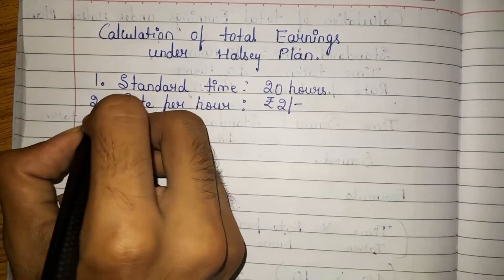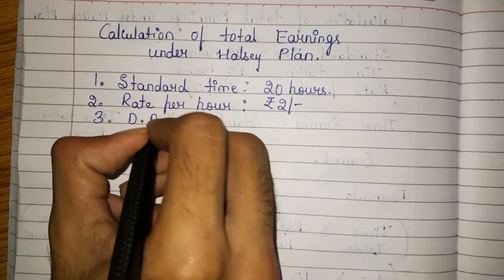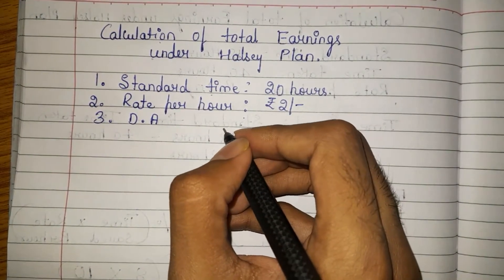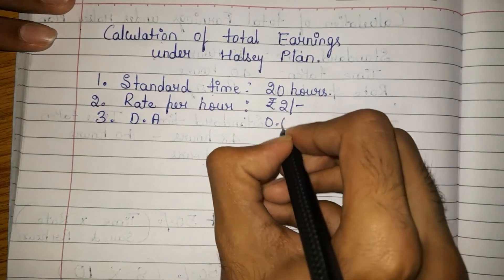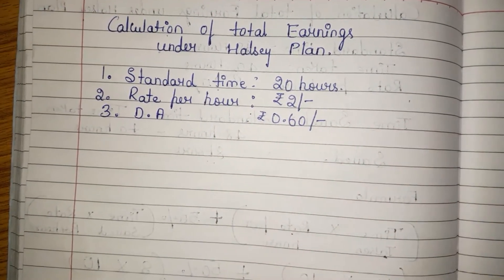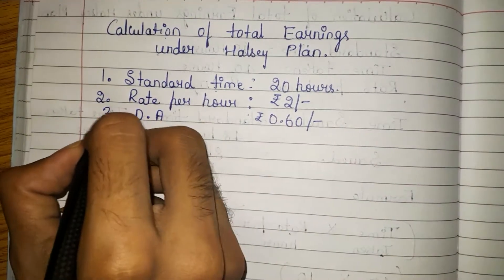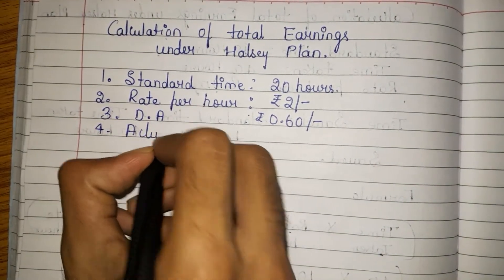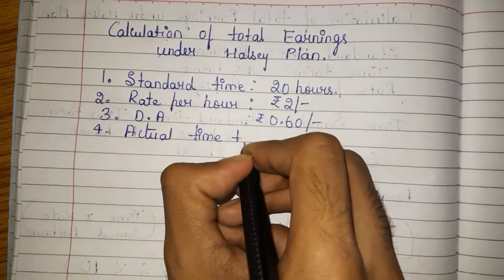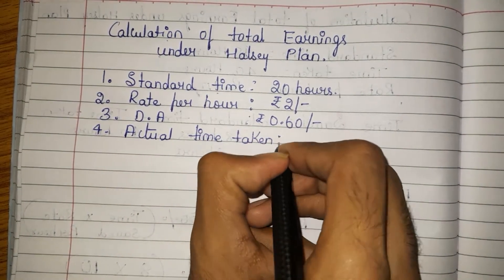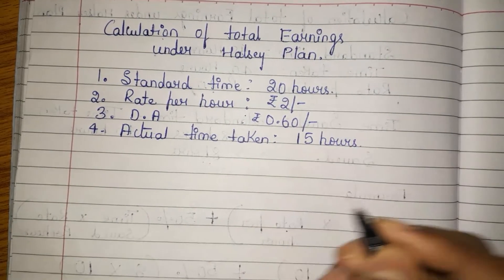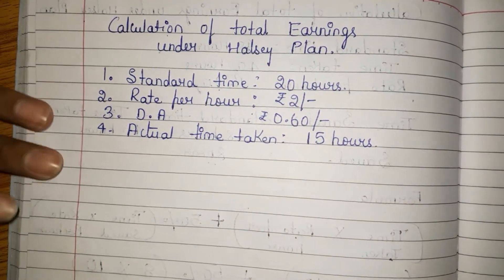Next, dearness allowance — they have given DA, which will be given for every hour worked, so 0.60, that is 60 paisa. Next, actual time taken — how much is the actual time taken? The worker has taken 15 hours. Now we need to calculate.